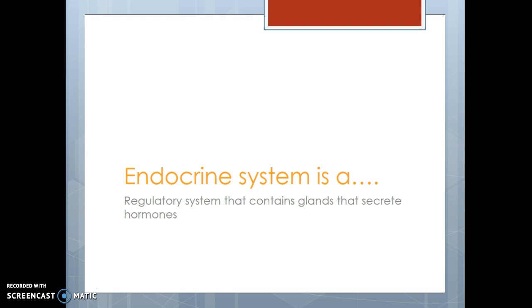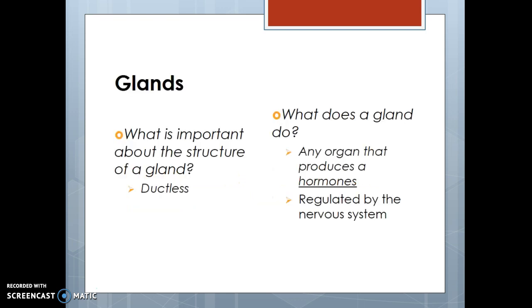You have all these glands throughout the body from head to pelvic area that will secrete certain hormones to maintain the body's homeostasis. Glands are important structures — they are ductless, meaning they don't travel down any type of highway or pathway. They're simply secreted to the tissue that is around them. Glands are organs that produce hormones and they're regulated by our nervous system.